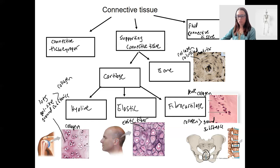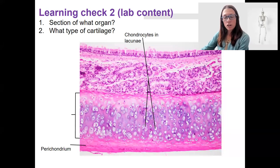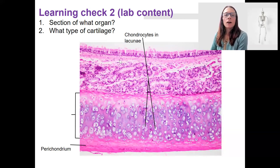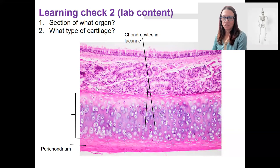I think that's what I want to cover for this video. We are going to look more at bone in detail in the next video. I do have one more learning check for this video, which is based on lab content. What organ is this section from? What cartilage is present in this organ? And hopefully you know where in this section that cartilage is located, as well as what other tissue types are located there.